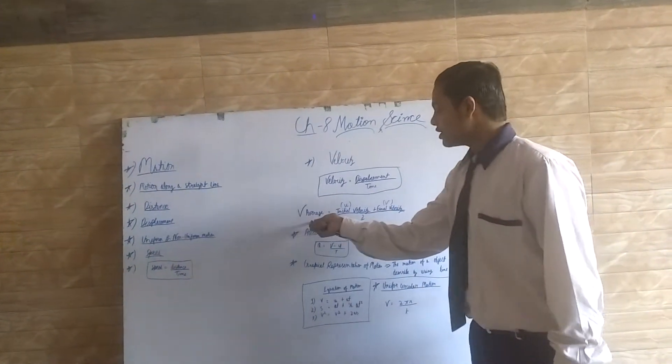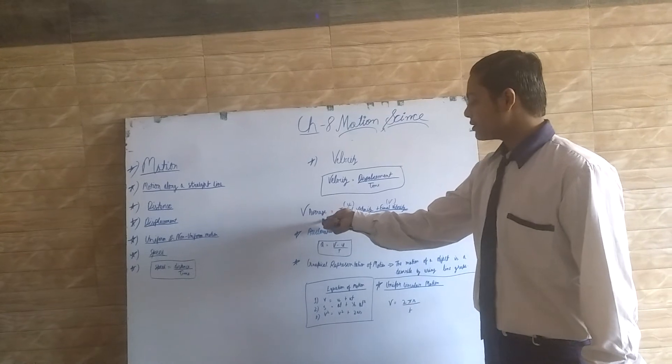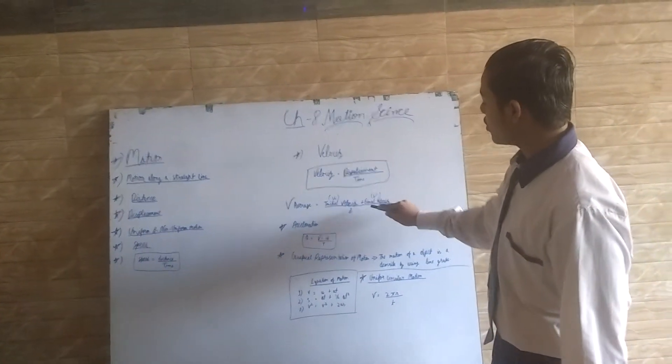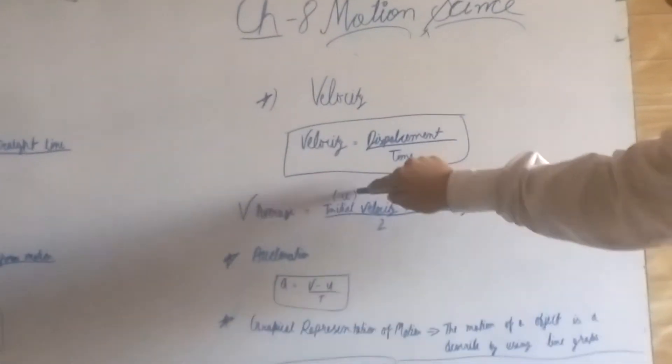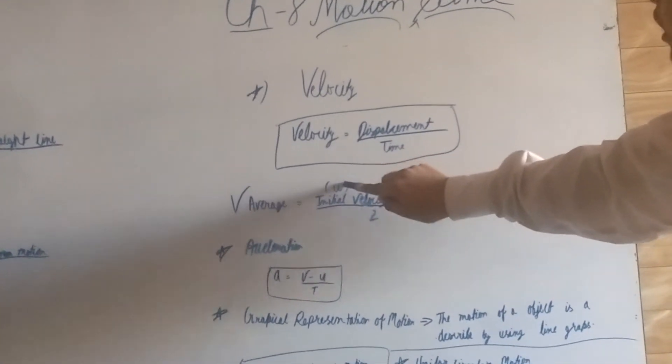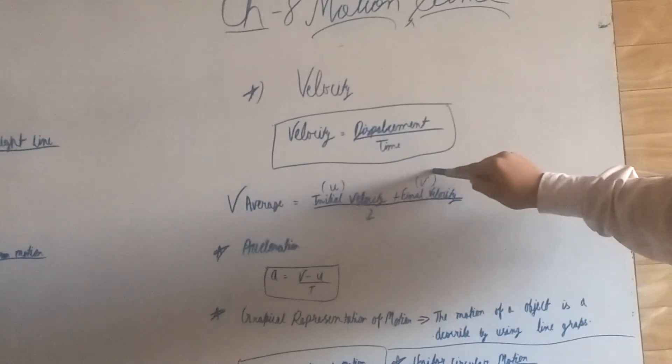Average velocity: Its formula is initial velocity plus final velocity divided by 2. In short form, we call initial velocity 'u' and final velocity 'v'.